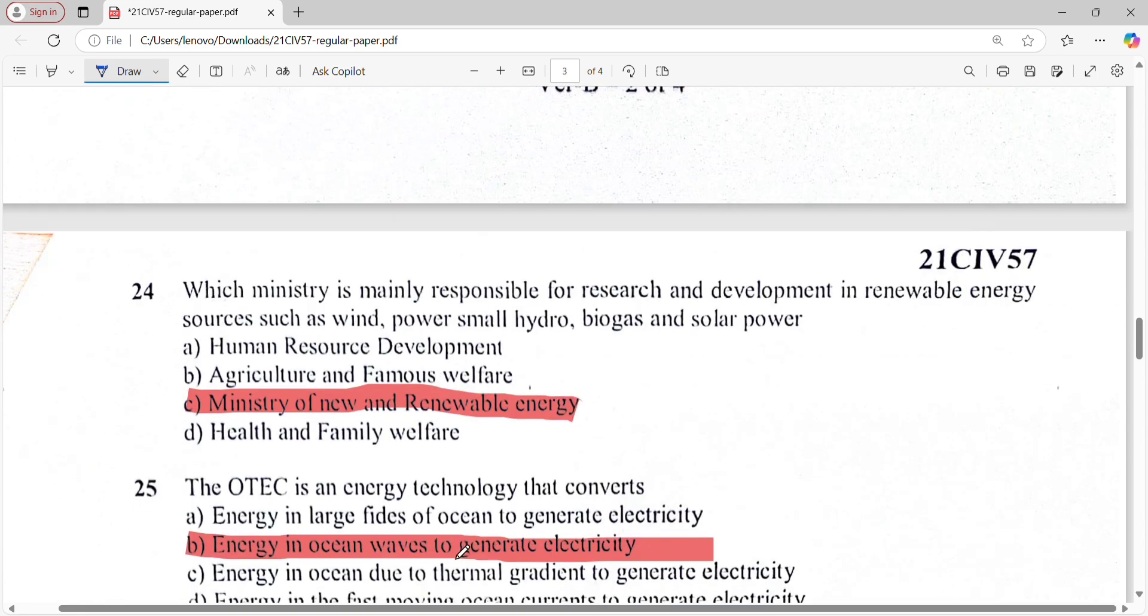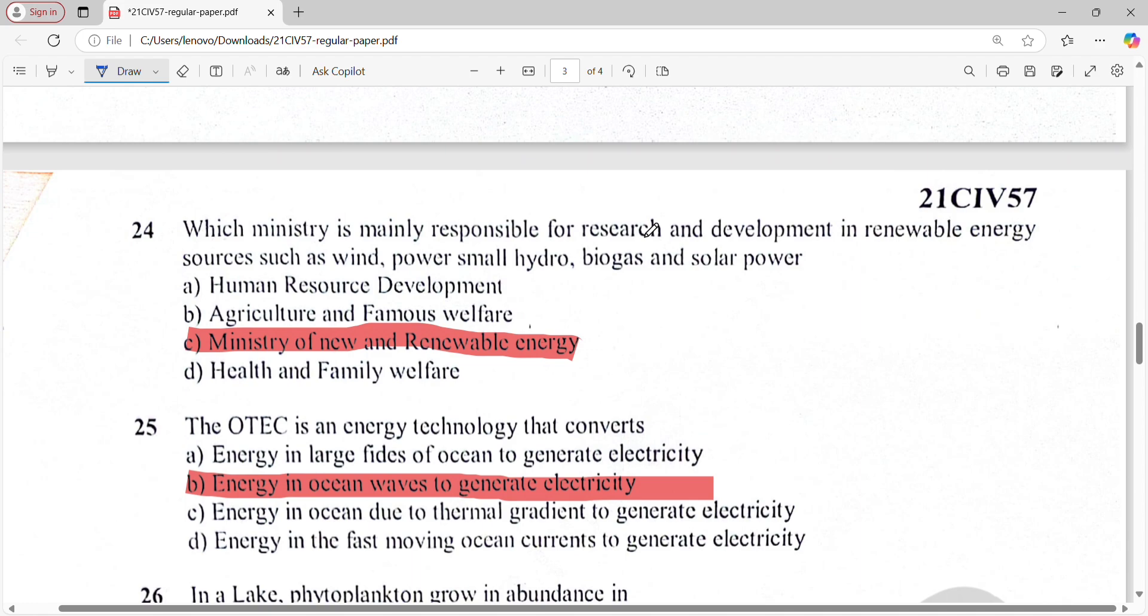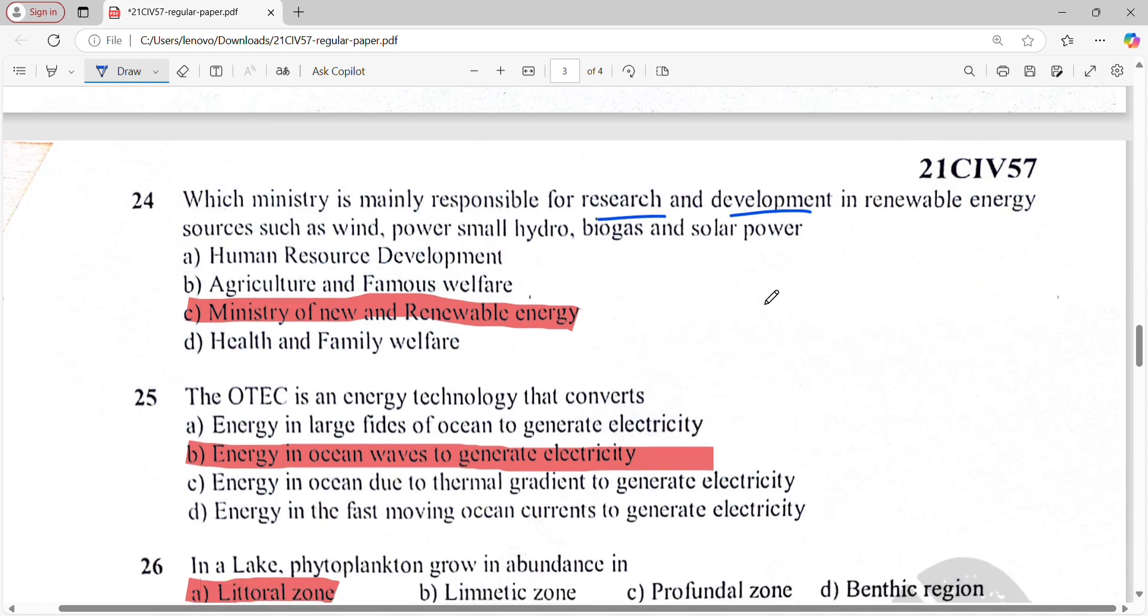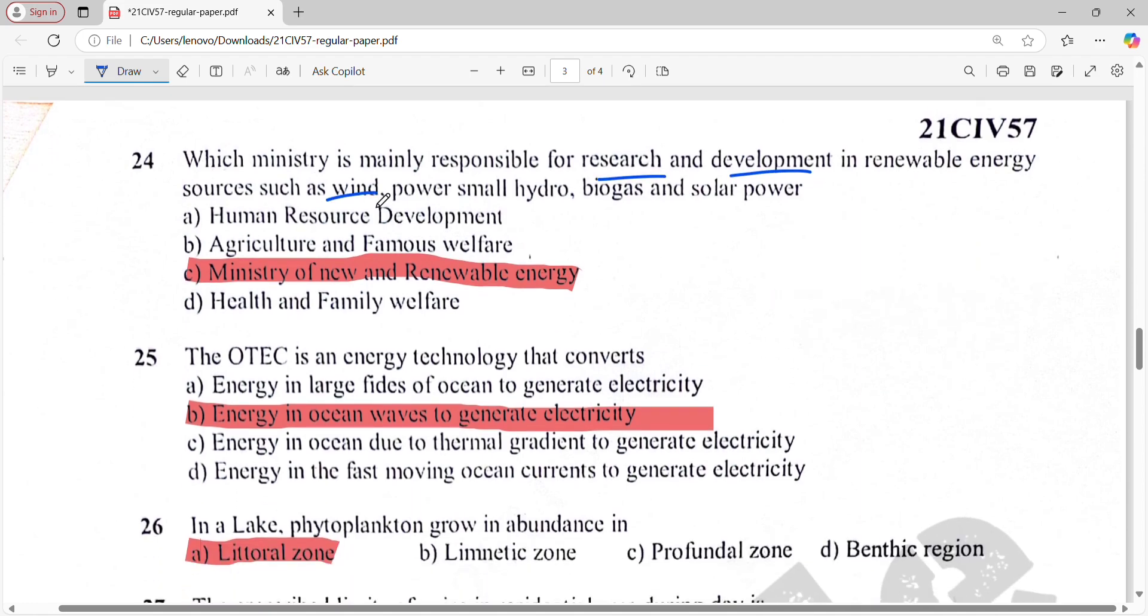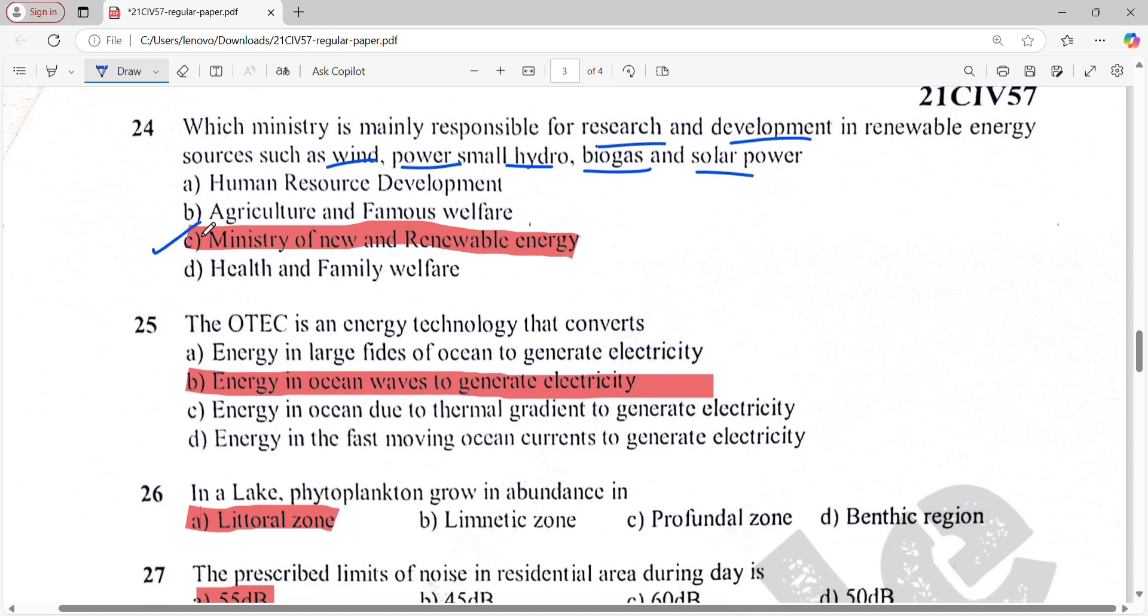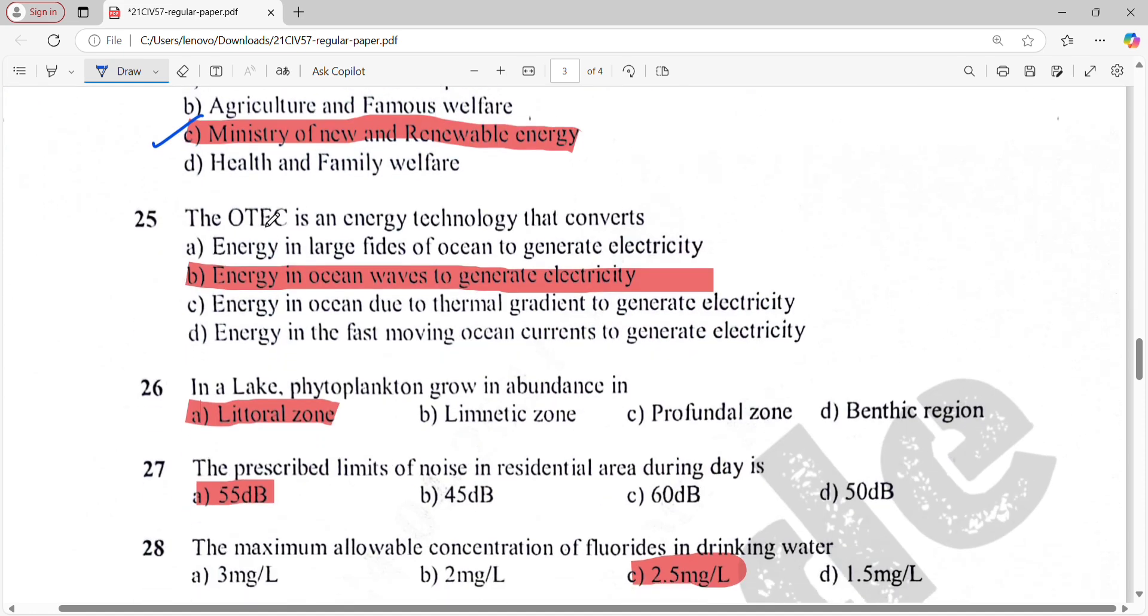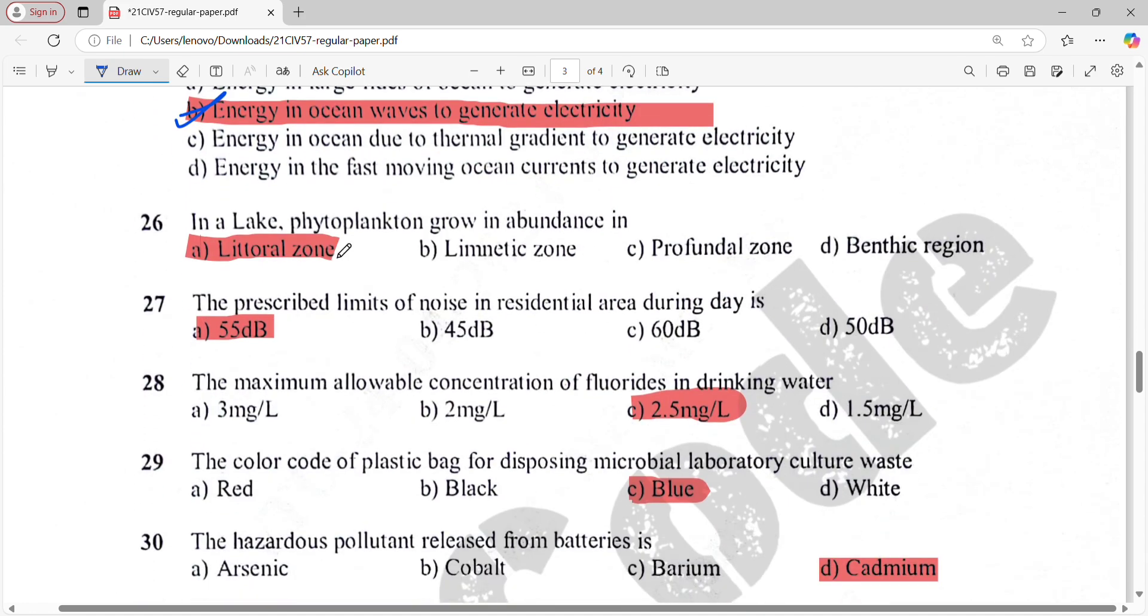Which ministry is mainly responsible for research and development in renewable energy such as wind power, small hydro, biogas, and solar? That is Ministry of New and Renewable Energy. The OTEC is an energy technology that converts energy in ocean waves to generate electricity. In a lake, phytoplankton grow in abundance in the littoral zone.